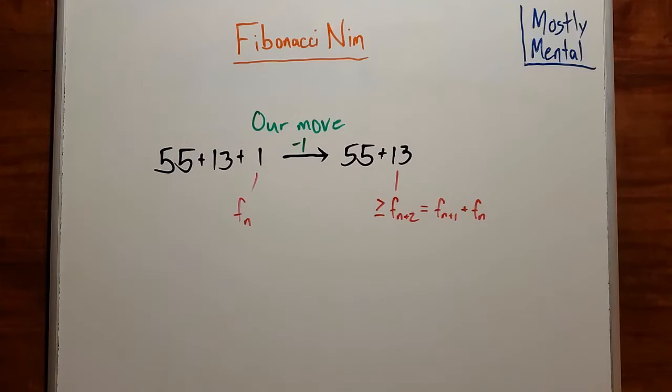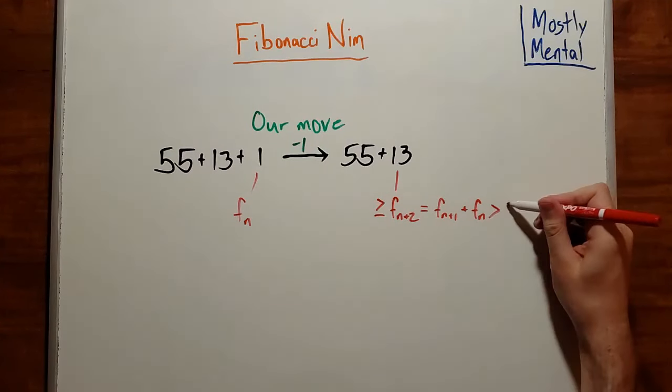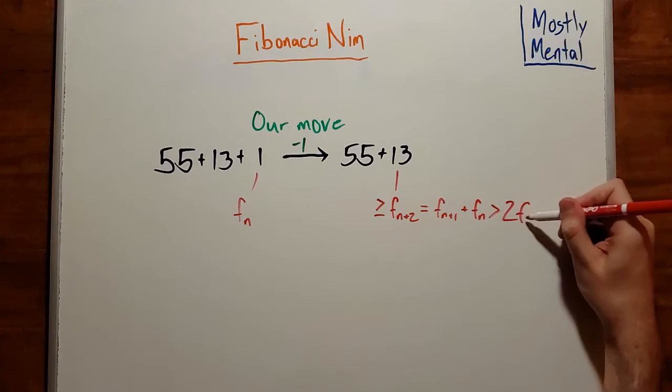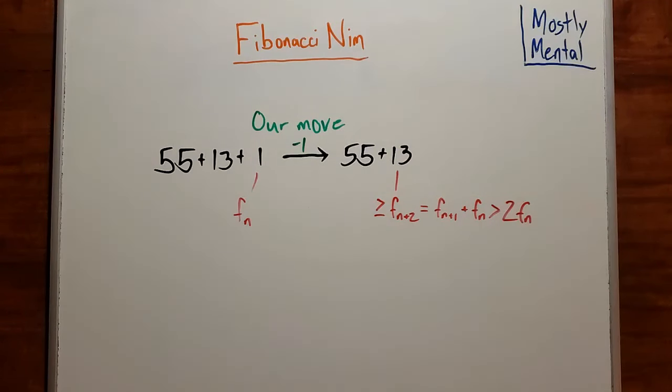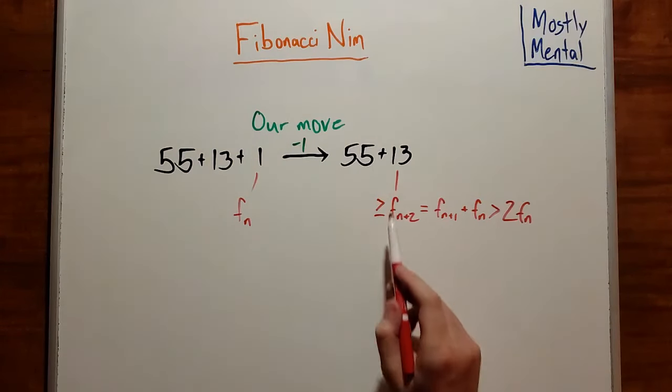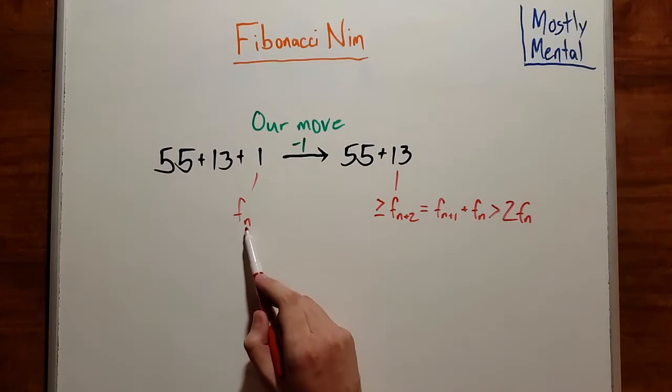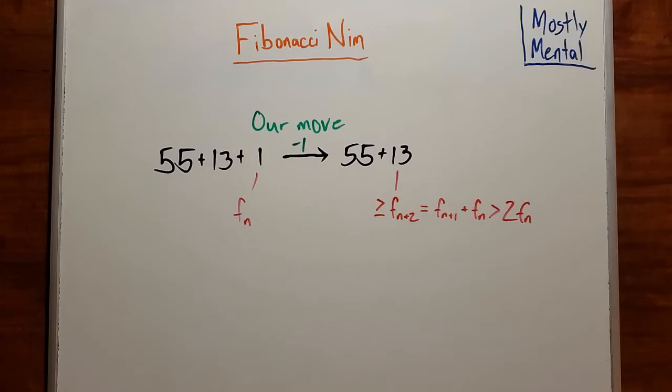And the Fibonacci sequence is increasing, so f_{n+1} is larger than f_n, so this is greater than 2f_n. Which means the smallest term left to the opponent is more than twice our previous move. In other words, the opponent can't remove the smallest term.